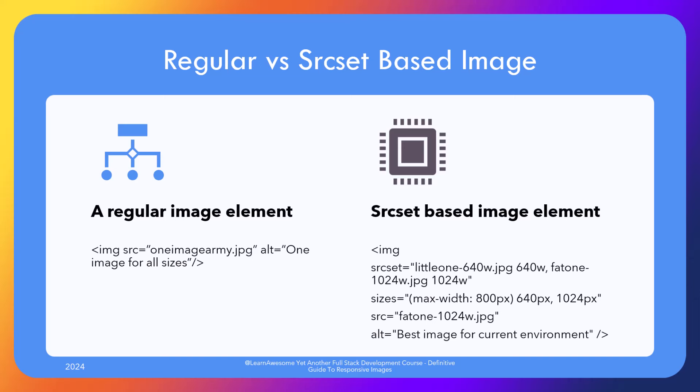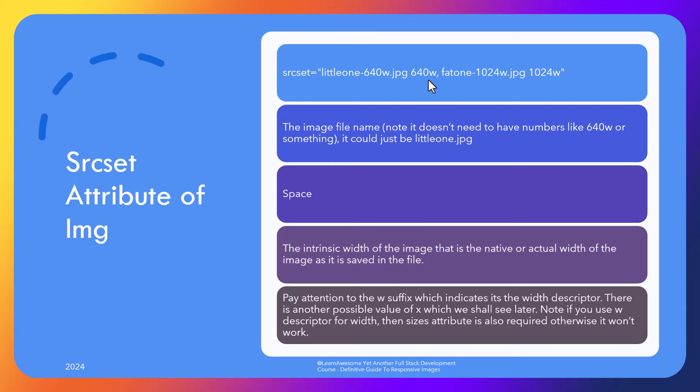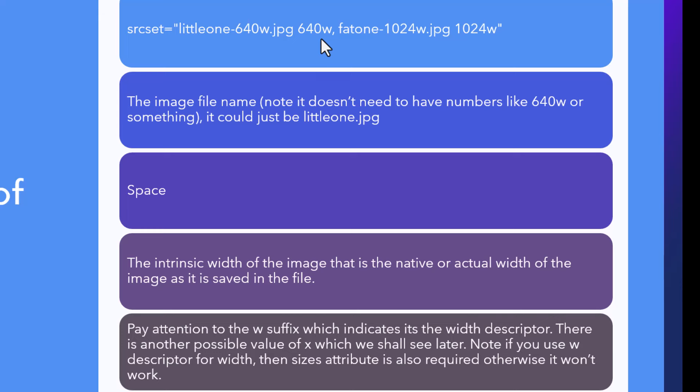Let's break it down. Source set is the set of images we give the browser to choose from, provided as a comma-separated list. Each entry has the image file name — which can be just a filename or a full URL — followed by a space, followed by the intrinsic width of the image in pixels as it is saved in the file. We only use the width and ignore the height; the browser automatically adjusts the image. Pay close attention to the 'w' suffix, which indicates it's the width descriptor. Note: if you use the w descriptor, the sizes attribute in the image element is also required, otherwise it would not work.